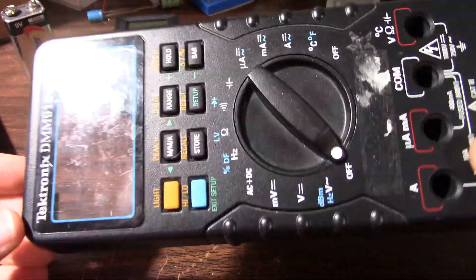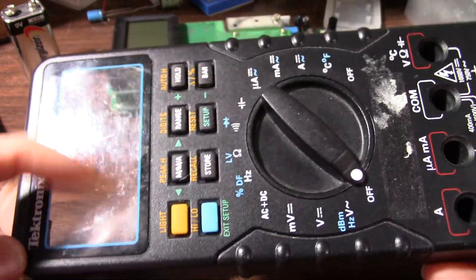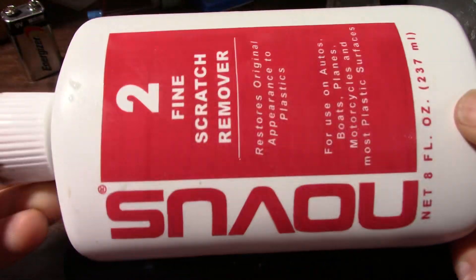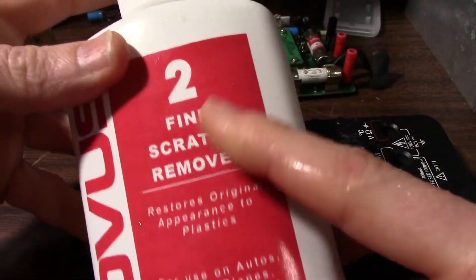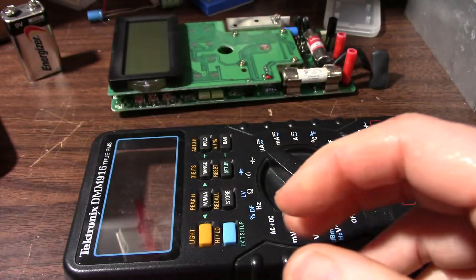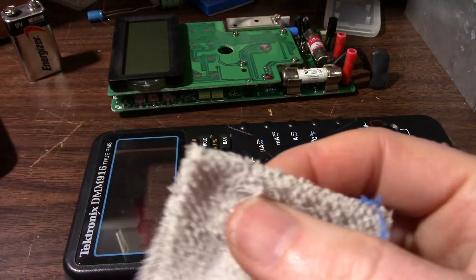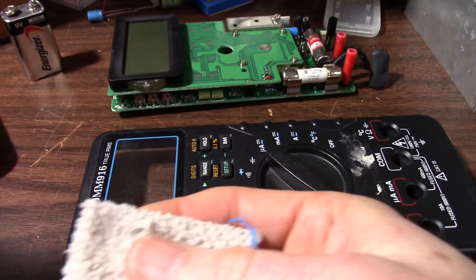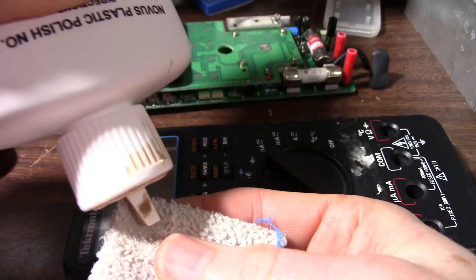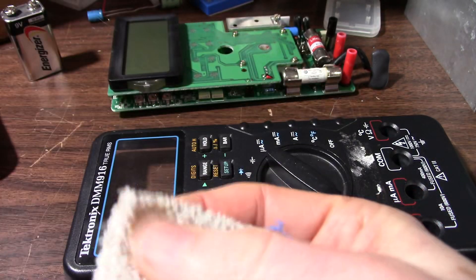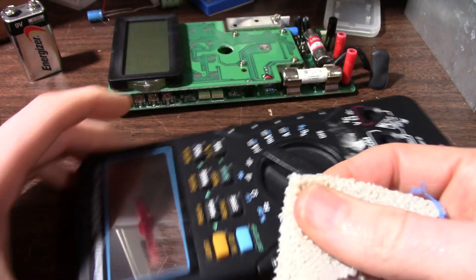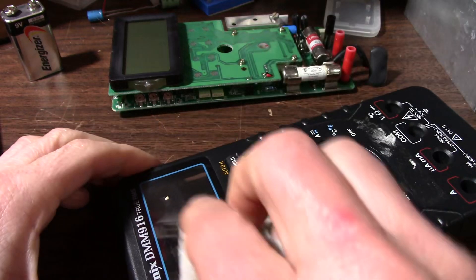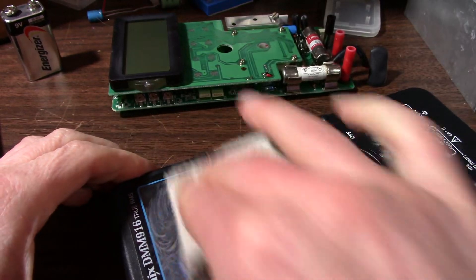One thing that drives me crazy is a scratched up display. You can get this stuff called Novus 2 scratch remover. Just take a damp cloth and put some of this Novus on it. Shake it up a little bit. And put some on there.